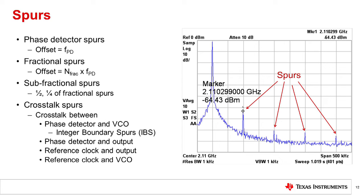Crosstalk spurs are somewhat tricky and not easy to deal with. One reason is that the spurs are usually close to the carrier. Another reason is that the degree of crosstalk is somewhat unpredictable. Spurs are a deep topic in RF synthesizer design. Among the many types of spurs, phase detector spurs are more manageable by design in general. Crosstalk paths include crosstalk between phase detector and output, reference clock and output, and reference clock and VCO. In general, it's better to keep spurs below minus 70 or minus 80 dBc if possible. Spurs will be discussed in more detail in another training video.